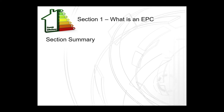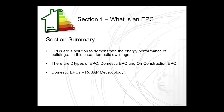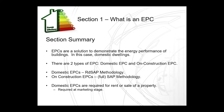A brief summary of Section 1: EPCs are a solution to demonstrate the energy performance of buildings, in this case domestic dwellings. There are two types of EPC — domestic EPC and on-construction EPC. Domestic EPCs use the reduced data SAP methodology. Domestic EPCs are required for the rent or sale of a property and are required at marketing stage. There are some exceptions to EPC requirements.